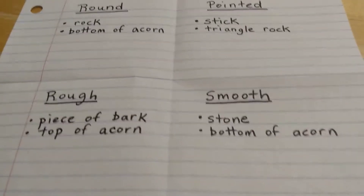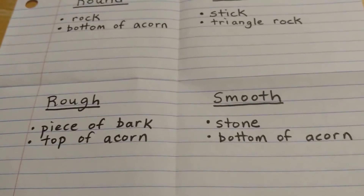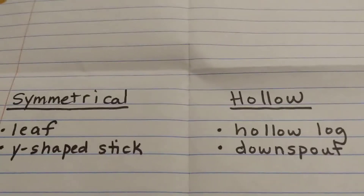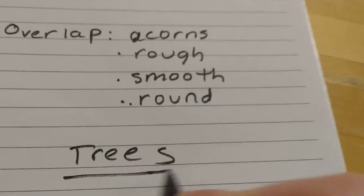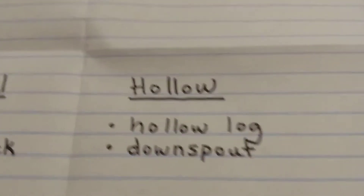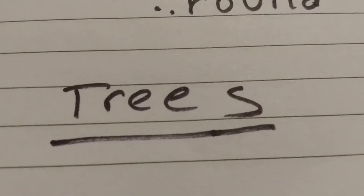Okay, I'm more interested now. What else do these have in common? The other thing I'm starting to notice is many of them come from trees. Acorns are the start of an oak tree, sticks come from trees, bark comes from trees, a hollow log is an old tree, a leaf comes from a tree, the y-shaped stick came from a tree. What's interesting to me is that a lot of these are different times in the life of a tree — the acorn, the stick, the hollow log. That feels like maybe there's a poem in that.